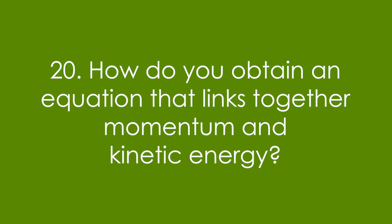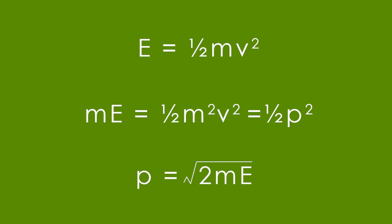Twenty, how do you obtain the equation that links together momentum and kinetic energy? Fairly tricky — people forget this one, but it's quite handy. We start off with E equals half mv squared, times the whole thing by m. We end up with mE equals half p squared. Rearranging, we get p equals the square root of 2mE. Hope you find this helpful. If you did, please leave a like. If you haven't seen my Particles flashcard questions, they link quite nicely together, so have a look at those. See you there.